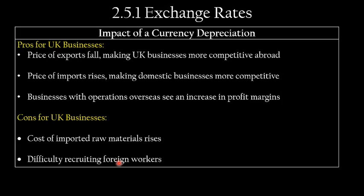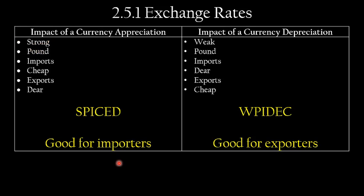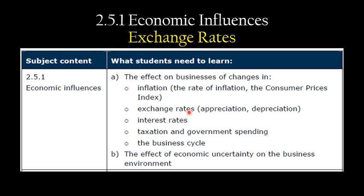To summarize, we can use the acronym SPICED: Strong Pound, Imports Cheap, Exports Dear. A strong pound is great news for businesses importing raw materials but bad news for exporters. Conversely, a Weak Pound means Imports Dear but Exports Cheap — it's expensive to import raw materials but great news if you're trying to export. That's a useful way to remember the impact of exchange rate changes on UK businesses.